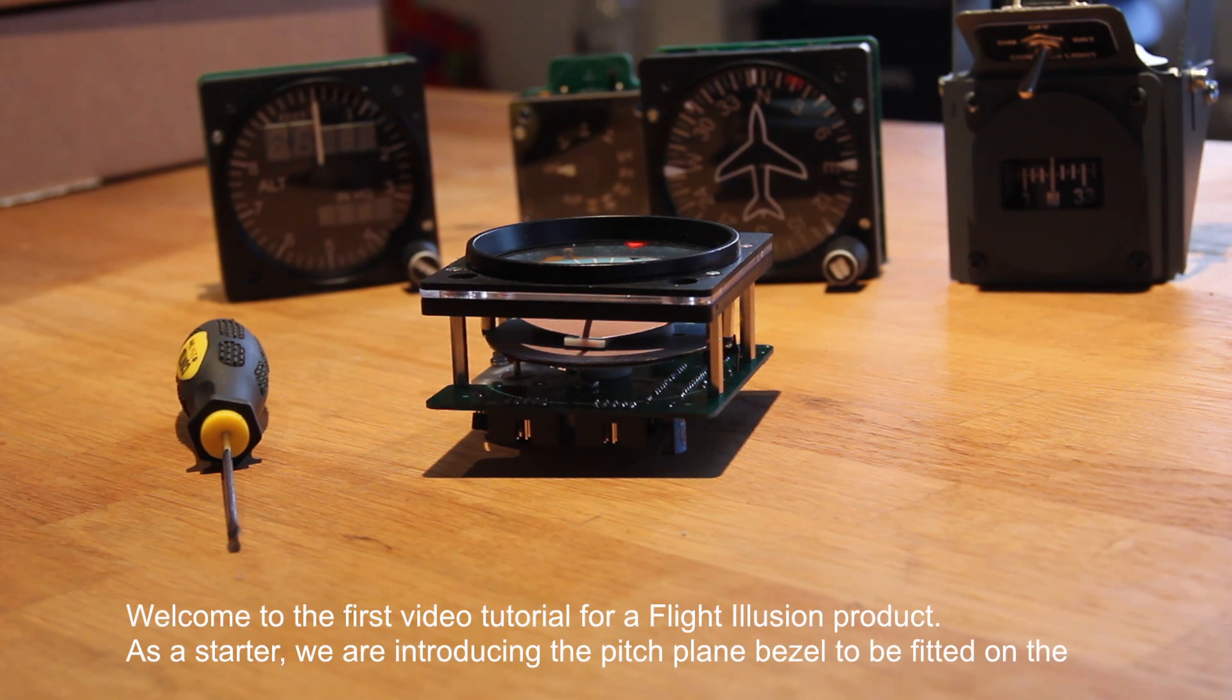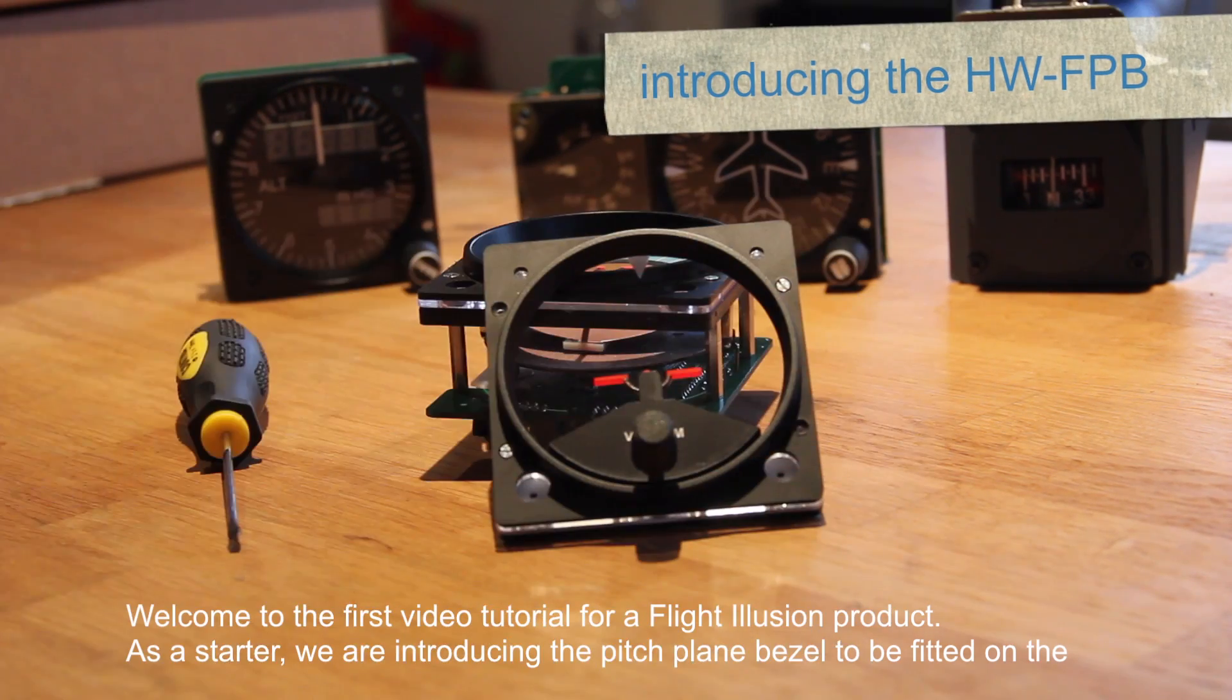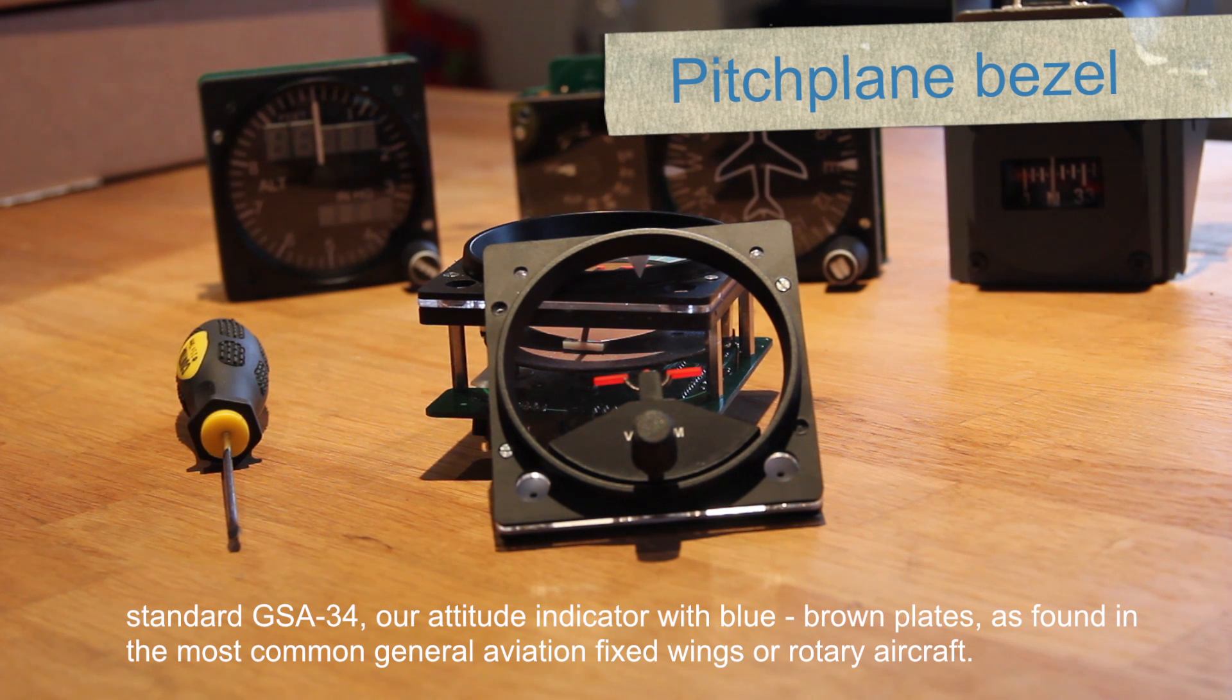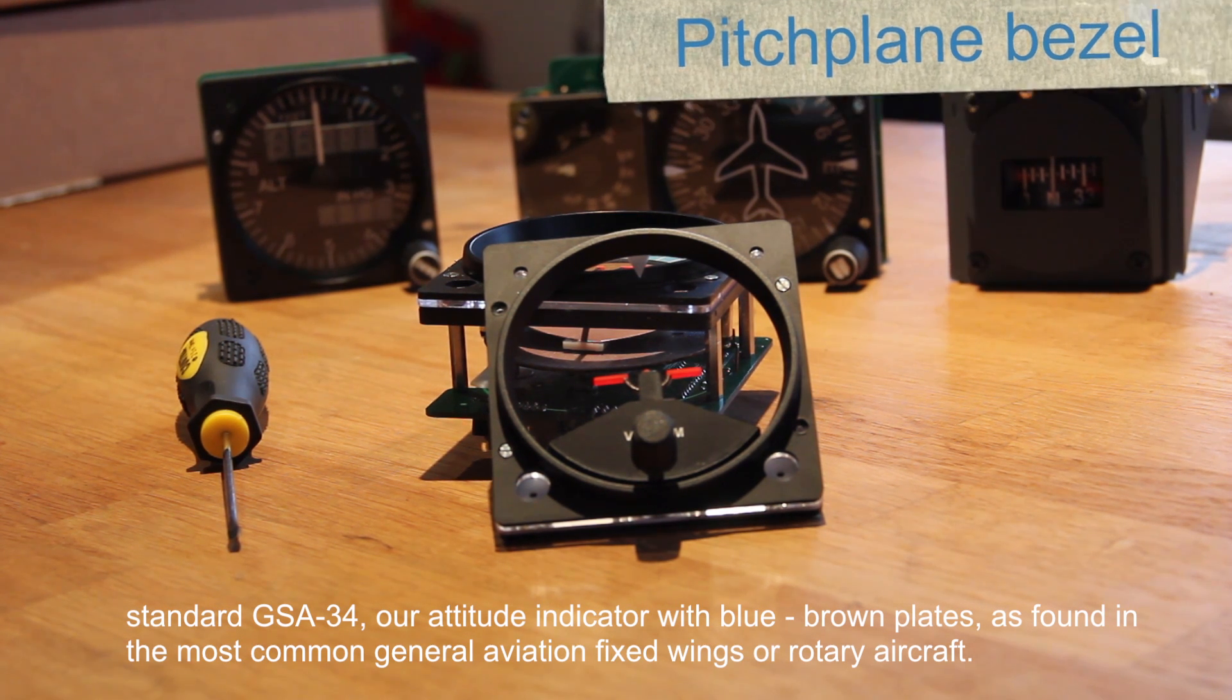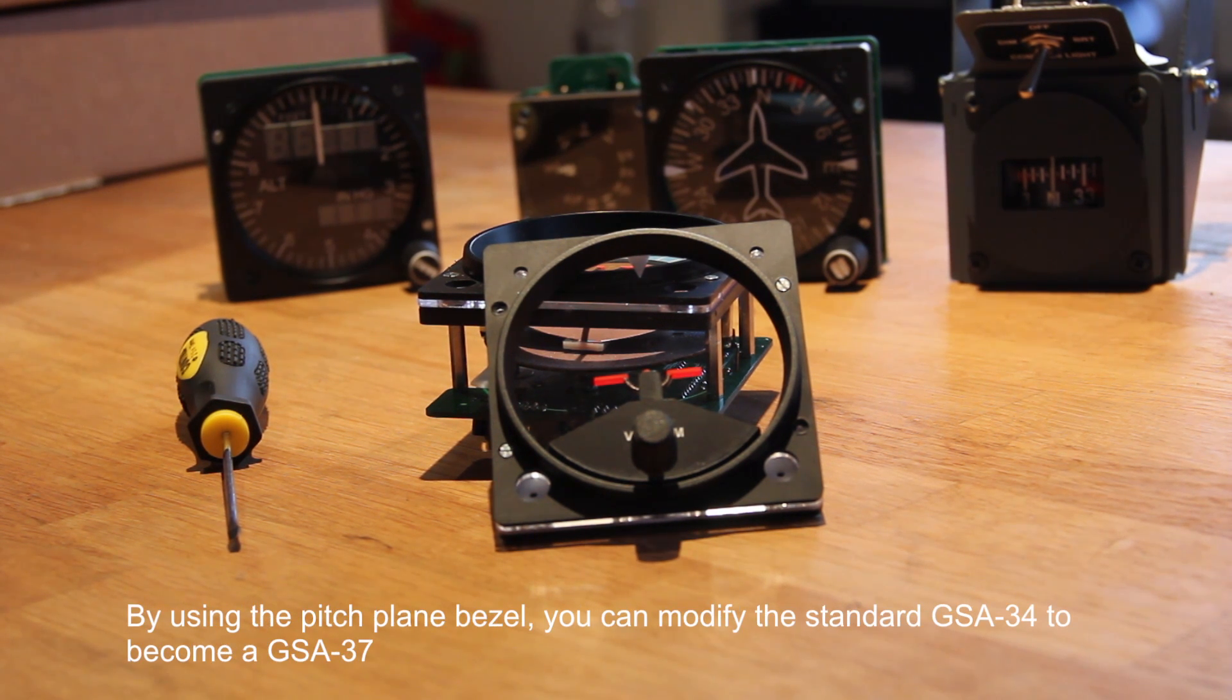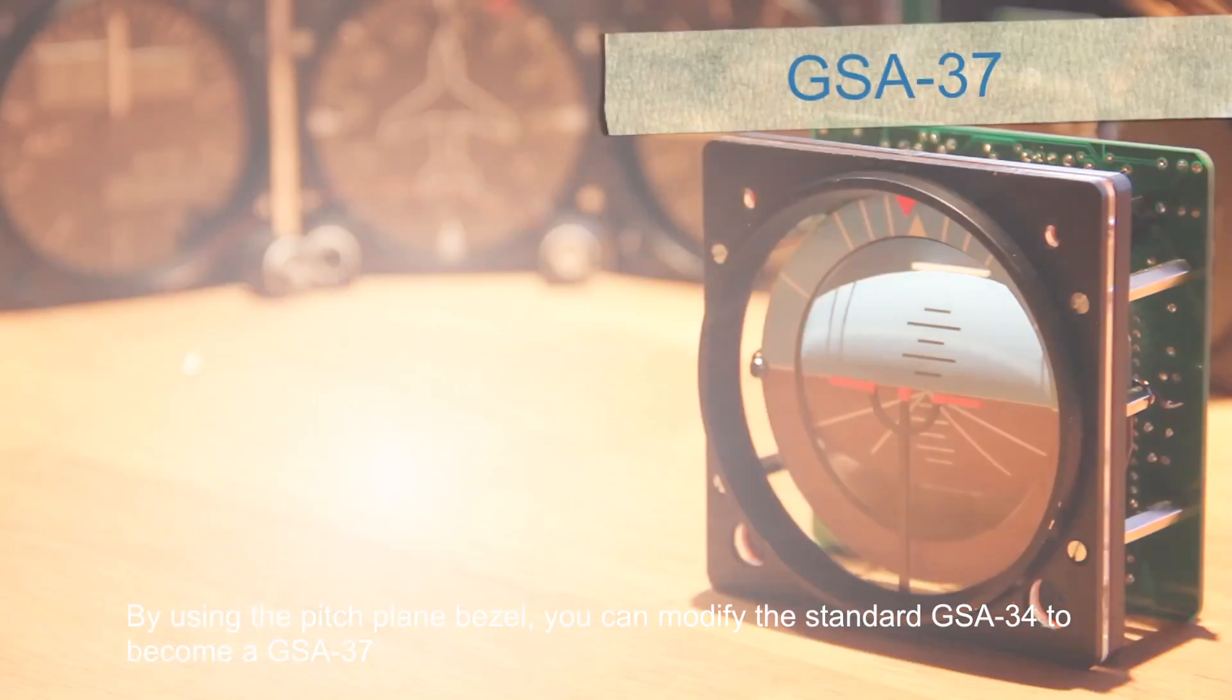Welcome to the first video tutorial for a Flight Illusion product. As a starter, we are introducing the pitch plane bezel to be fitted on the standard GSA-34, our attitude indicator with blue-brown blades, as found in the most common general aviation fixed wing or rotary aircraft. By using the pitch plane bezel, you can modify the standard GSA-34 to become a GSA-37.